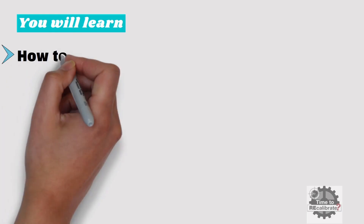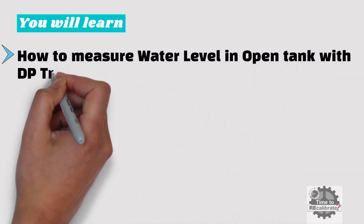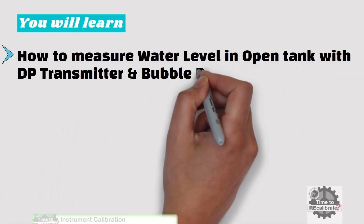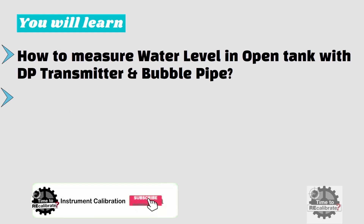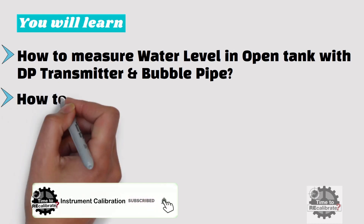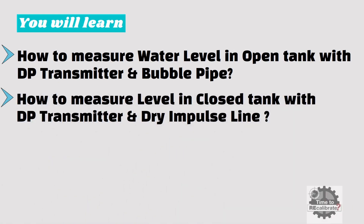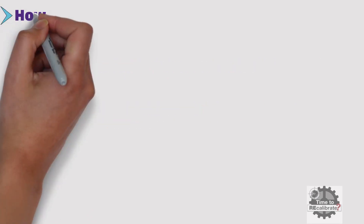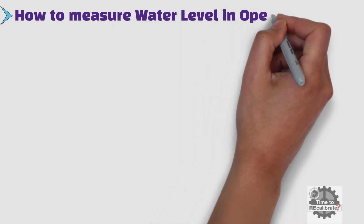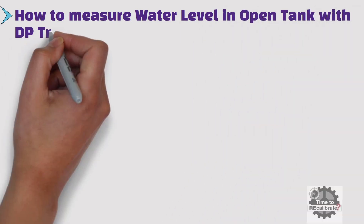In this video, you will learn how to measure water level in an open tank with a DP transmitter and bubble pipe, and how to measure level in a closed tank with a DP transmitter and dry impulse line. First of all, how to measure water level in an open tank with a differential pressure transmitter and bubble pipe?